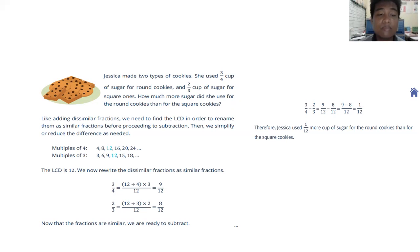We now rewrite the dissimilar fractions as similar. Three-fourths: twelve divided by four equals three, times three equals nine, so nine-twelfths. Two-thirds: twelve divided by three equals four, times two equals eight, so eight-twelfths. Now the fractions are similar so we can subtract: nine-twelfths minus eight-twelfths equals one-twelfth. Therefore, Jessica used one-twelfth more cup of sugar for the round cookies than for the square cookies.